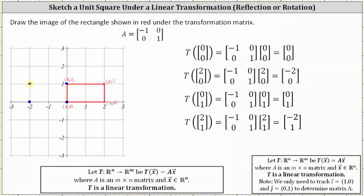Now we have the four vertices of the transformed rectangle, so we can sketch the transformation. Notice the result is a rectangle reflected across the y-axis.